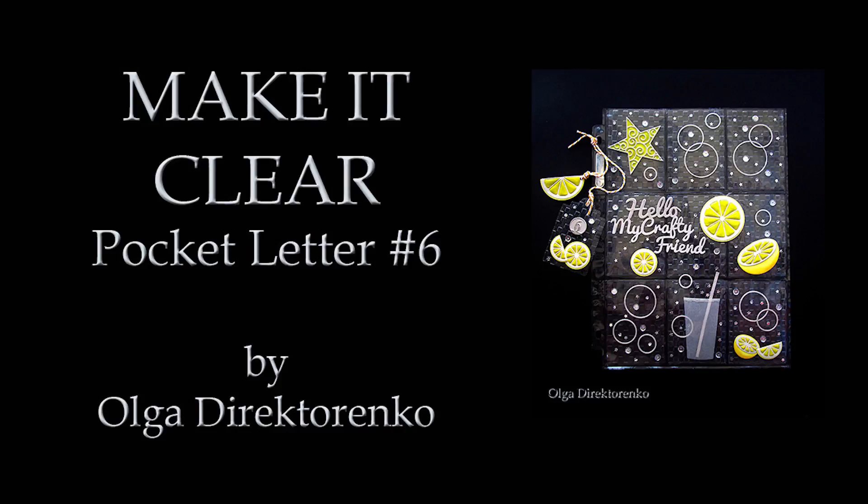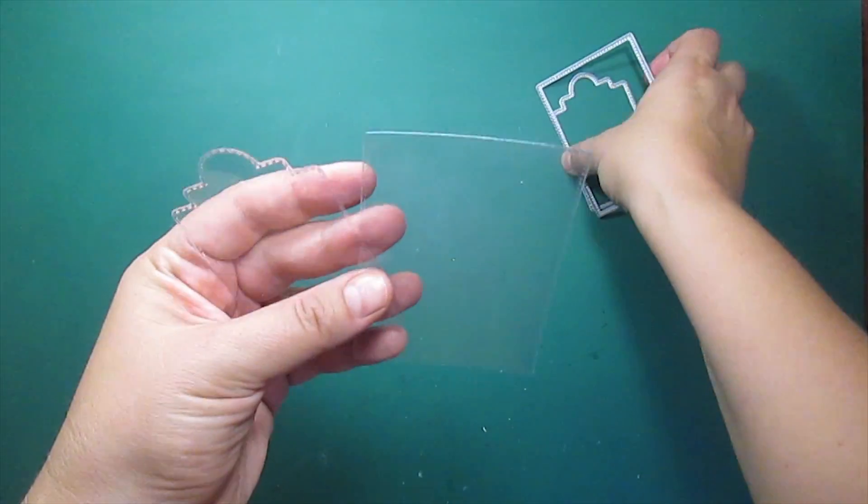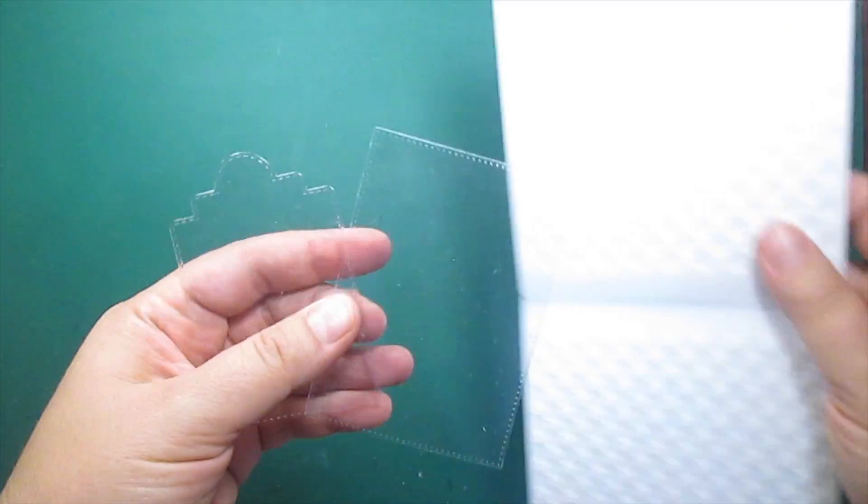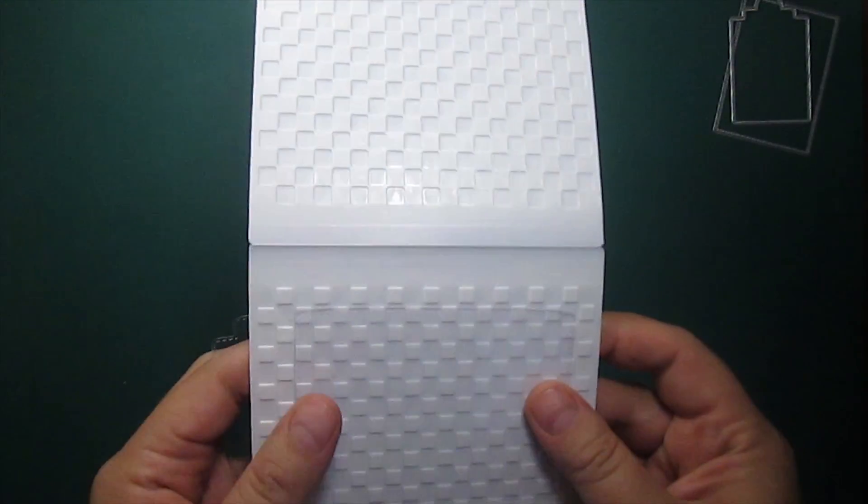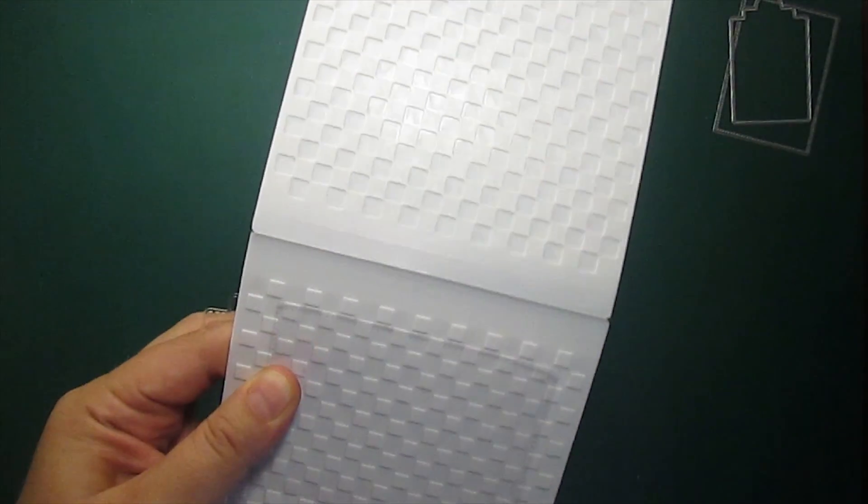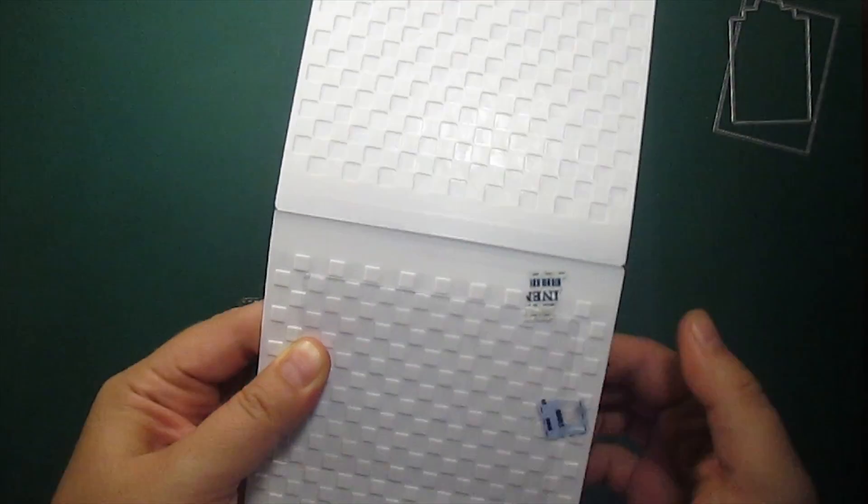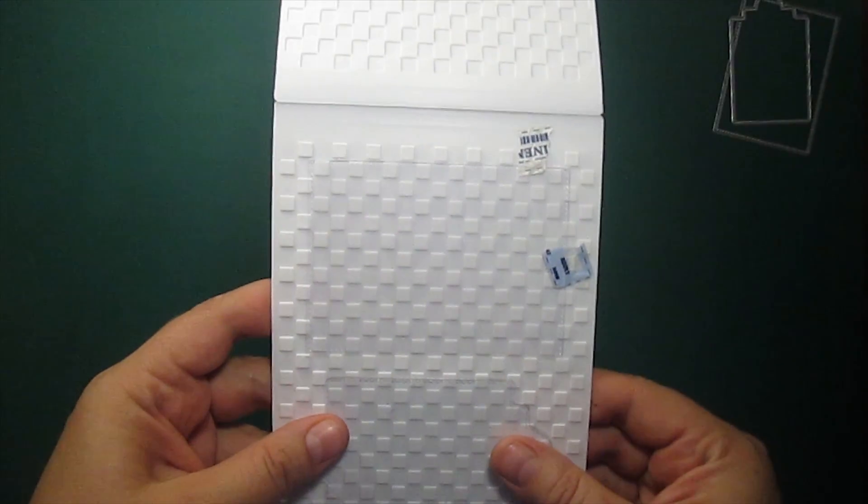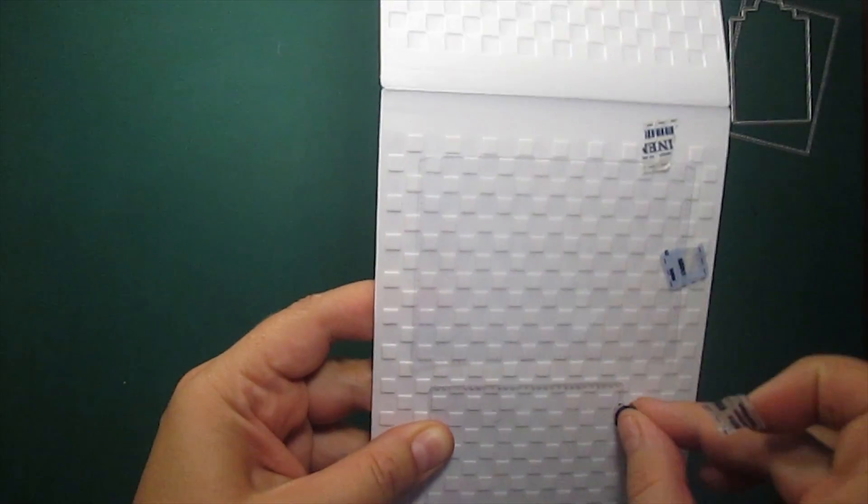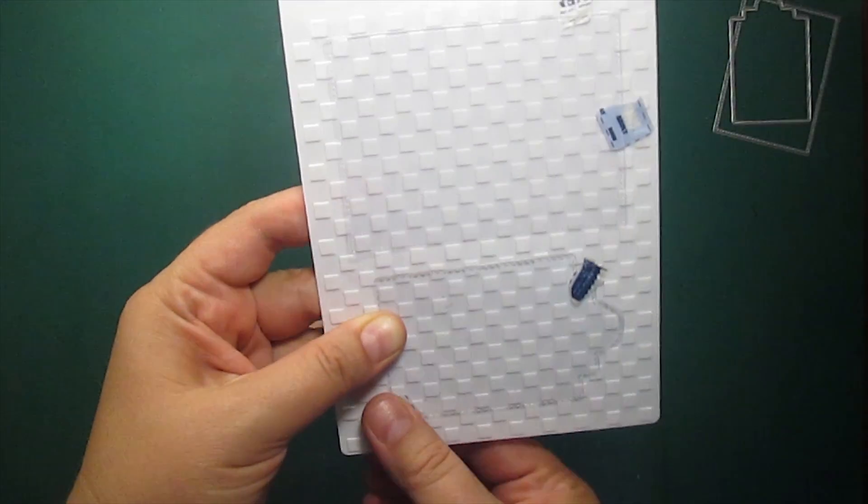Today's pocket letter is a bit different from the others because I'm going to make it totally transparent. I've die-cut a pinpoint rectangle and a tag out of acetate and now I'm going to secure them inside the checkered pattern embossing folder with some pieces of washi tape, making sure they are straight.